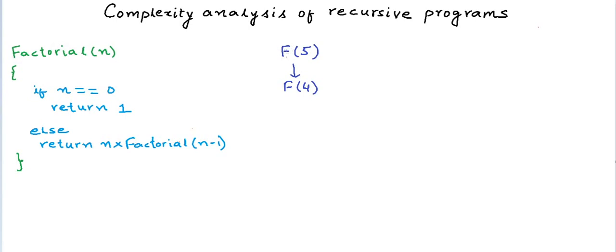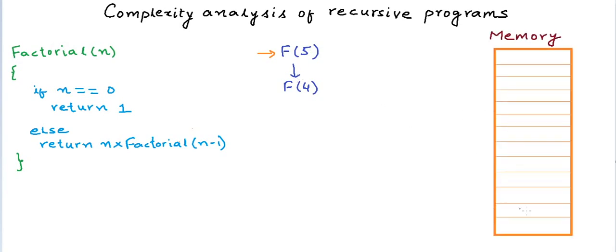Now F(5) goes on to calculate F(4) recursively. What happens at this stage is that the computer says that hey, I will save the state of this particular function called F(5), which means saving all its local variables and its current state of execution in the memory, and go ahead and calculate F(4) first. And once I am done with F(4), I will come back to F(5). Let's say this is the computer's memory on the right, and these partitions are some unit in which the memory is divided.